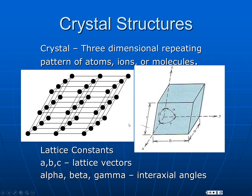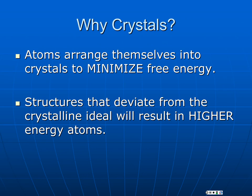The crystal structure is defined by a set of lattice constants. A, B, and C define the lengths of the sides of a unit cell — the basic building block of the larger structure. Alpha, beta, and gamma define the angles between the axes for a given structure. Crystals form because atoms organize in these structures to minimize their free energy. Anything that causes the structure to be disrupted is going to raise the energy of the atoms, since they won't be in that ideal neighborhood.